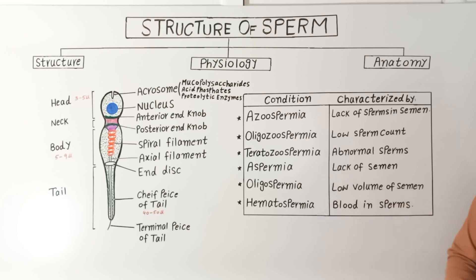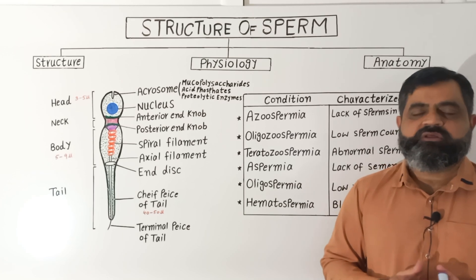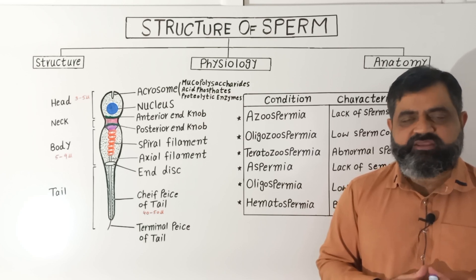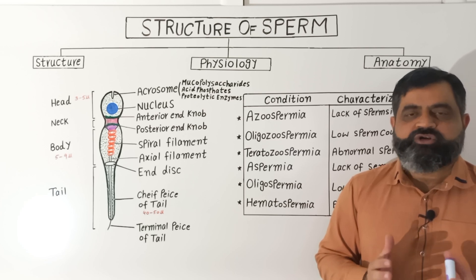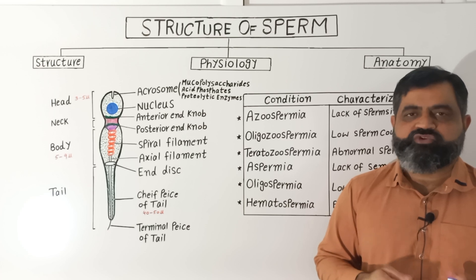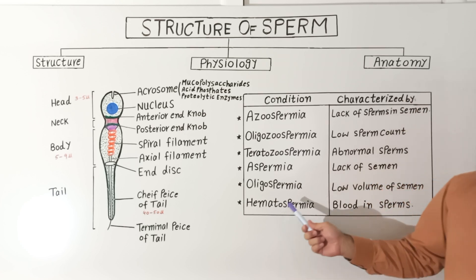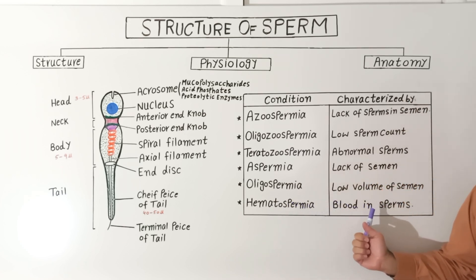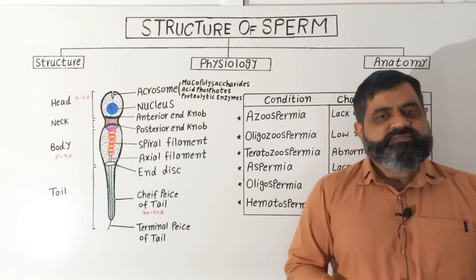The last condition is hematospermia, in which there is blood in the semen. This blood could be coming from an infection in the gonads, prostate gland, seminal vesicles, or urethra. The infection must be treated to resolve this condition. Hematospermia is a condition in which the semen contains blood. That's all for today — see you in the next lecture.